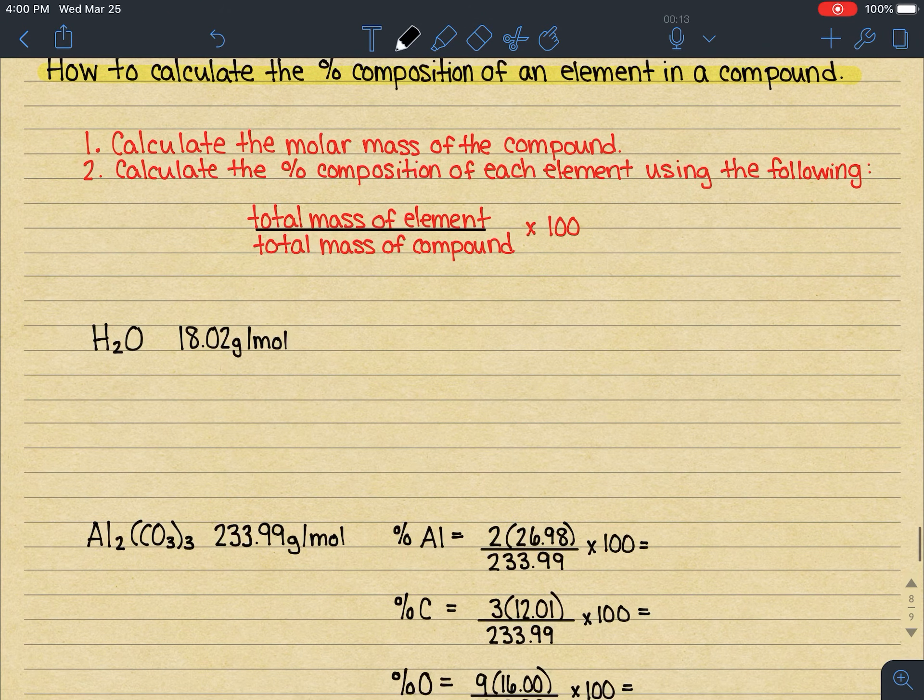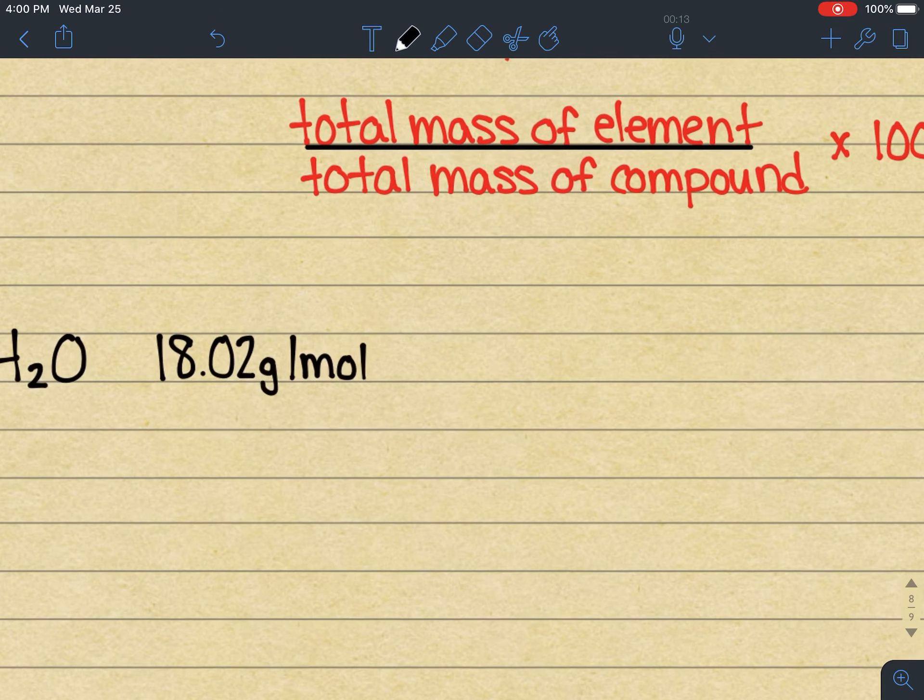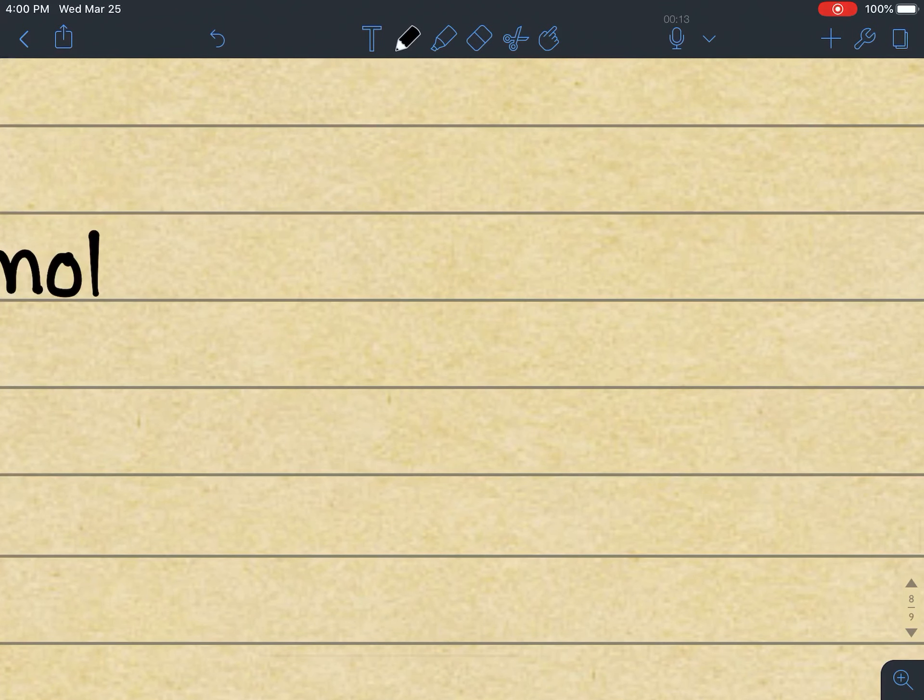All right, so the first example that we're going to walk through is the example of water. Now when you're setting this up, again, we're just going to break it down into the two elements, the first being hydrogen. So we have two hydrogen atoms in a compound of water, and each hydrogen atom has a mass of 1.01.